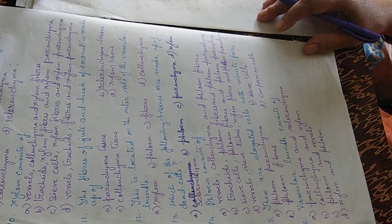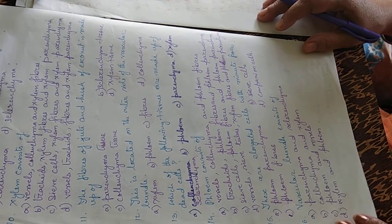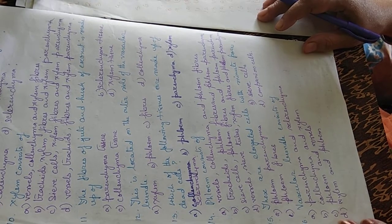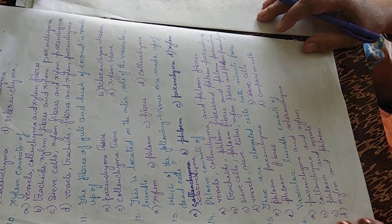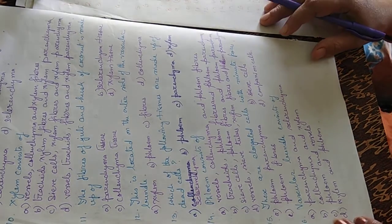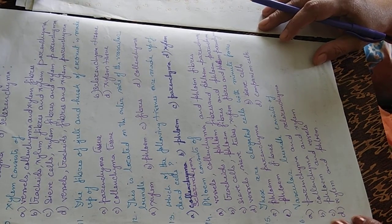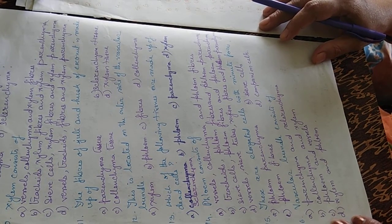Which of the following tissues are made up of dead cells? Options are sclerenchyma, phloem, parenchyma, and xylem. The answer is sclerenchyma — sclerenchyma tissues are made up of dead cells.